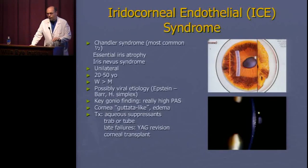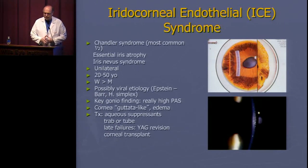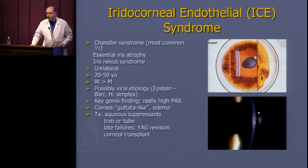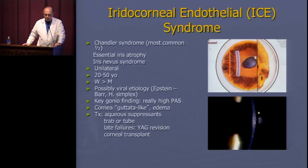Another cause of non-pupillary block secondary angle closure is ICE syndrome — iridocorneal endothelial syndrome. Dr. Ralph Eagle at Wills was a pioneer in grouping together three entities: Chandler syndrome (most common), essential iris atrophy, and iris-nevus syndrome, considered a continuum of the same problem. They can look very different from each other.